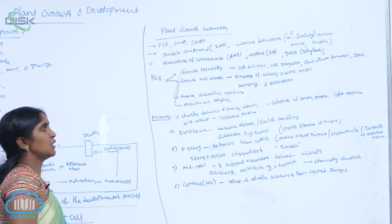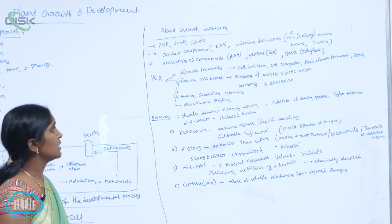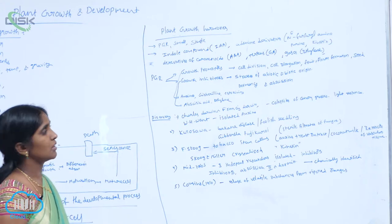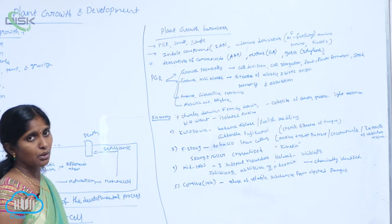They are auxins, gibberellins, and cytokinins. Another type is growth inhibitors. Growth inhibitors inhibit the growth.